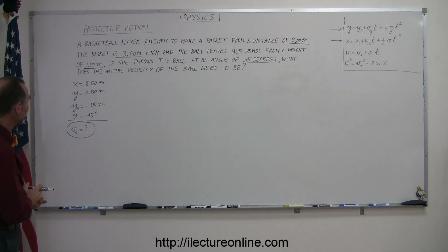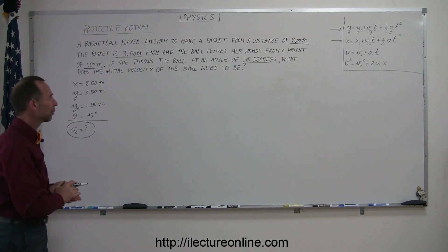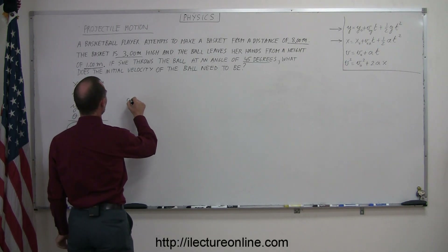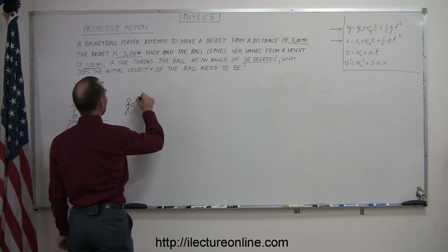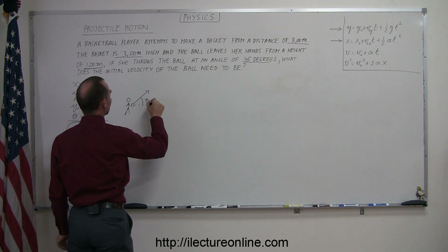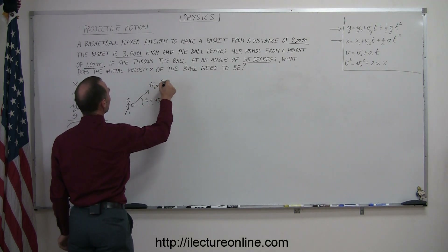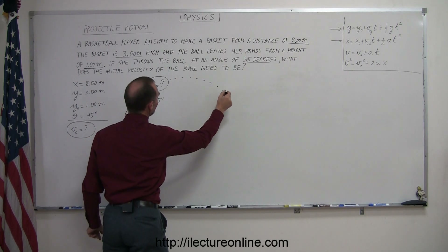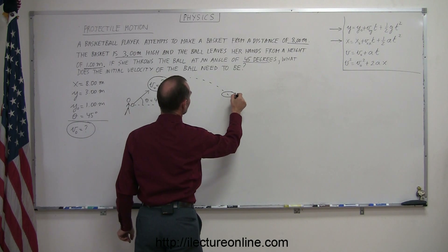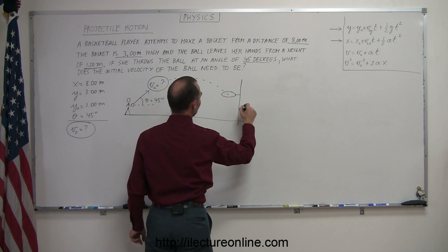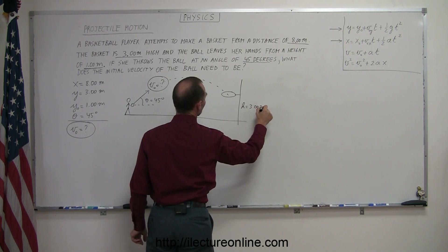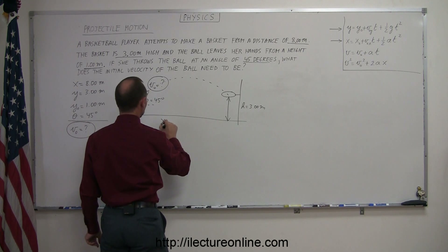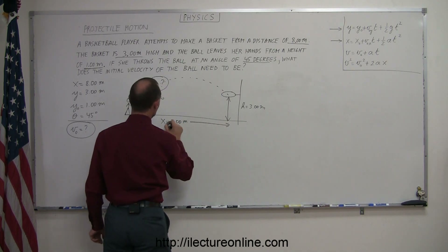We have a pretty good idea now what's given and what they're asking for, but in order to really feel what we need to do here, we want to make a nice little drawing of what's happening. Here's our basketball player throwing the basketball at an angle of 45 degrees — theta equals 45 degrees — with some initial velocity, which we don't know. The basketball will move in a parabolic path, and we're trying to hit the basket. The basket has a height of 3 meters, that's the final height, and the basket is 8 meters away.